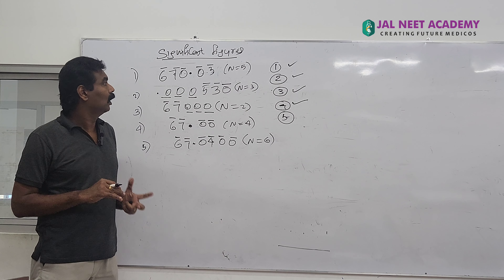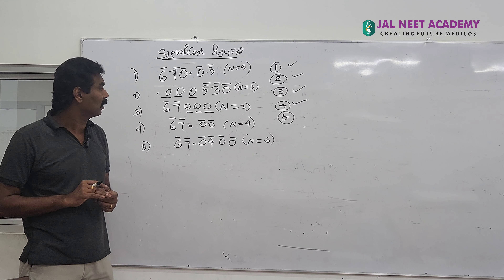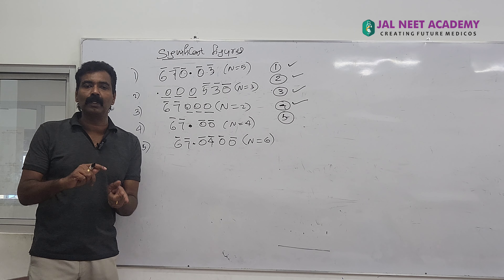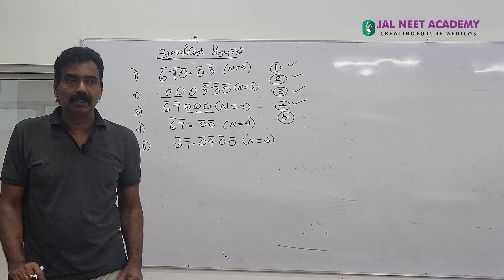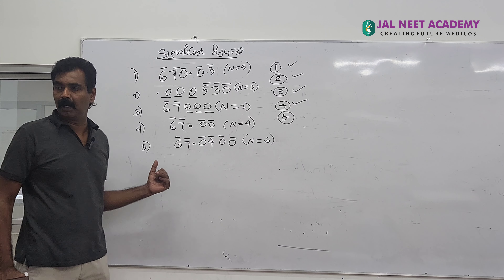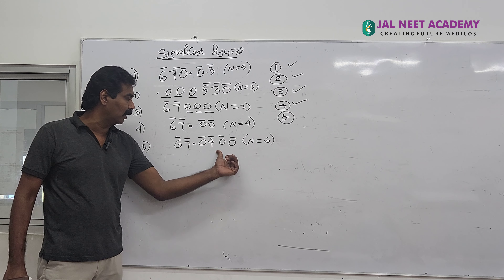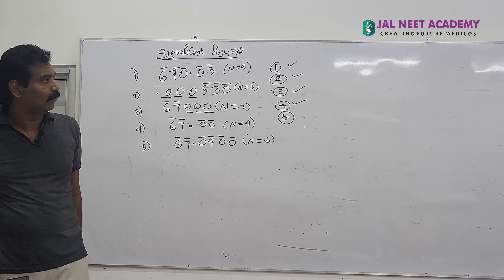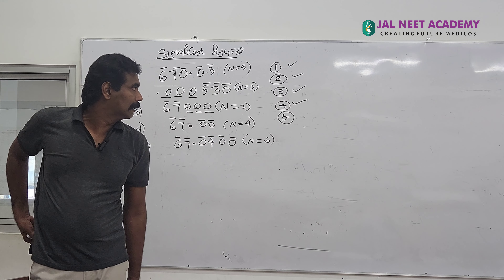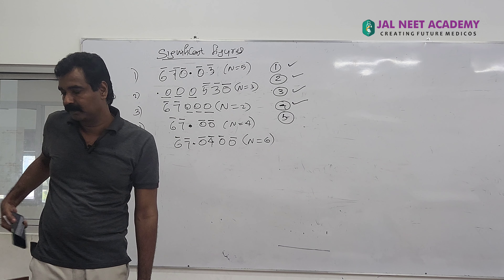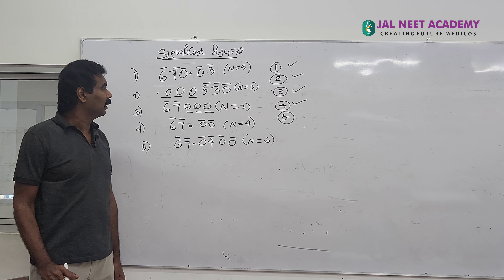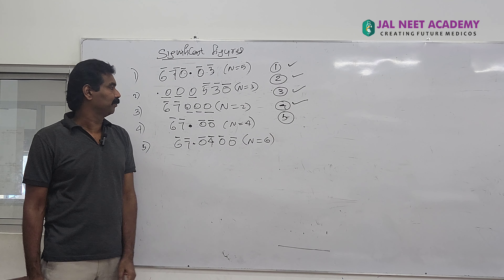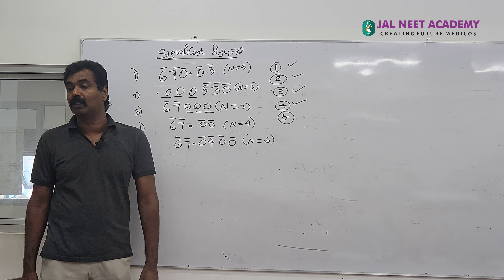Rule 1: all non-zero digits are significant. Rule 2: zeros between two non-zero digits are significant — for example, the zero between 7 and 4 is significant. Rule 3: in a number without a decimal, the trailing zeros are not significant.